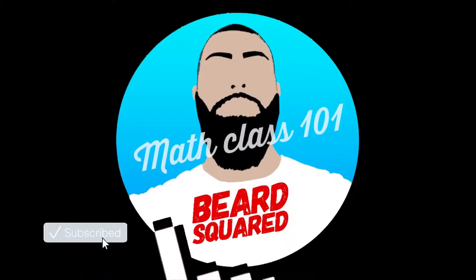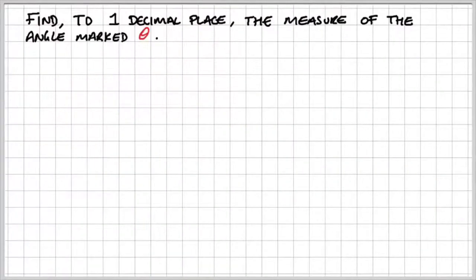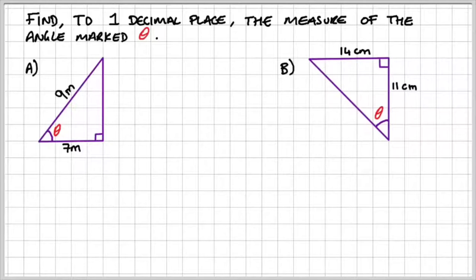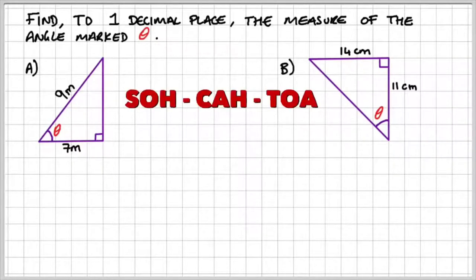Okay, let's do an example. Find to one decimal place the measure of the angle marked theta. We've got part A and part B, and we're going to use SOH-CAH-TOA. So if you pause the video here and try it for yourself, and then play when you're ready, and I'll give you the worked solutions.